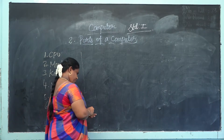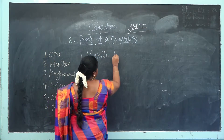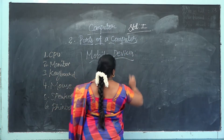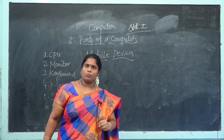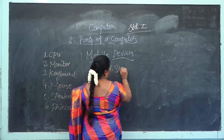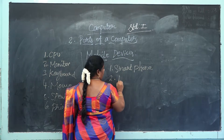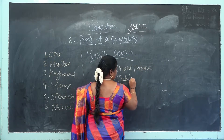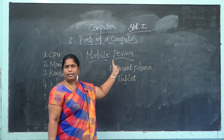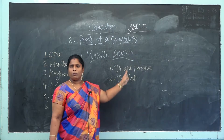Next, we will learn about mobile devices. What are the mobile devices? Smartphone and tablet are the mobile devices. Already you know that. First one: smartphone. Second one: tablet. Already you must have seen these machines in the hands of elders. What are the mobile devices? Smartphone and tablet are the mobile devices.